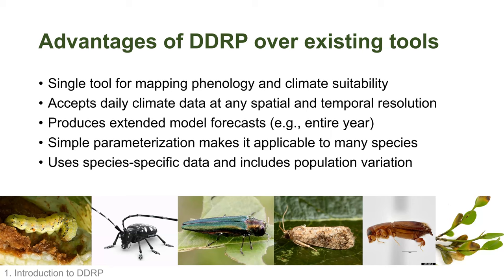DDRP has a relatively simple parameterization that makes it applicable to many different species. Some phenology models are so complex they can only be used for a single species, but DDRP was intended for many different species. It uses species-specific data and includes population variation — meaning it describes the duration of each life stage and accounts for variation in emergence timing across the population. For emerald ash borer, adults don't all emerge on a single day; you typically see a distribution of emergence times, which DDRP accounts for with several parameters.